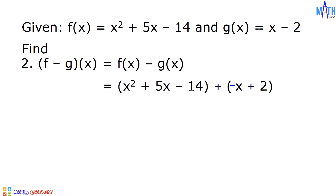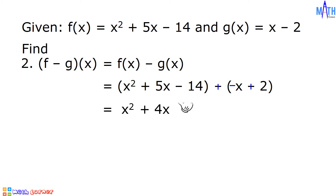Let us combine similar terms. We have x squared, and 5x plus negative x is equal to positive 4x. Negative 14 plus positive 2 equals negative 12. And this is the difference: x squared plus 4x minus 12.